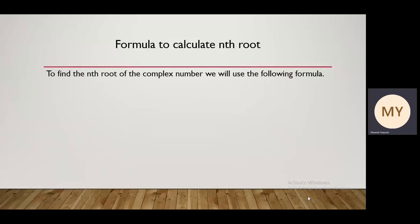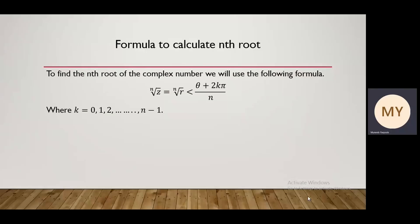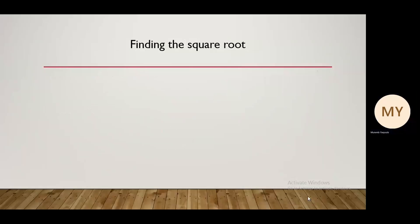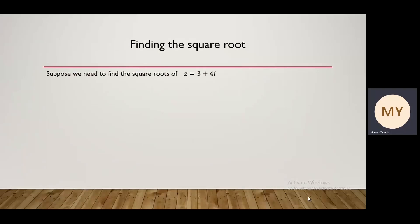Formula to calculate the nth root: the nth root of z equals the nth root of r, argument (theta plus 2k pi) divided by n, where k equals 0, 1, 2 till n minus 1. For square roots n equals 2 and k equals 0 and 1. For cube roots n equals 3 and k equals 0, 1, or 2. For fourth roots n equals 4 and k equals 0, 1, 2, or 3, and so on.